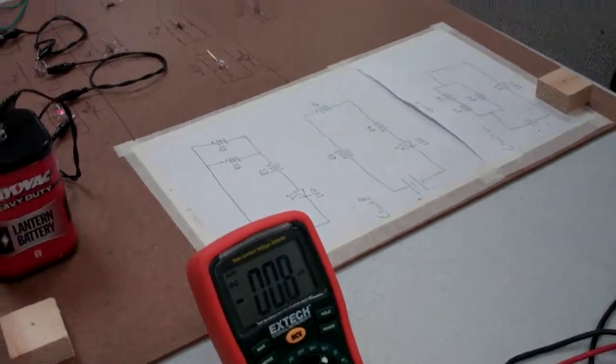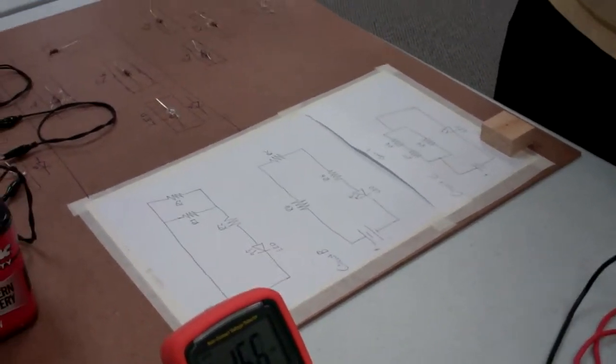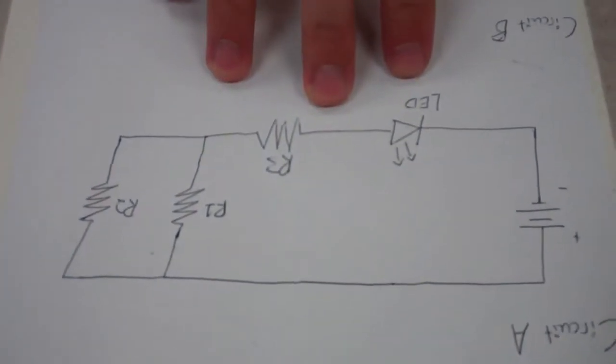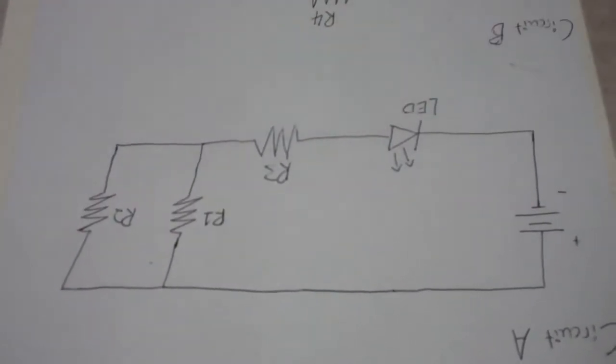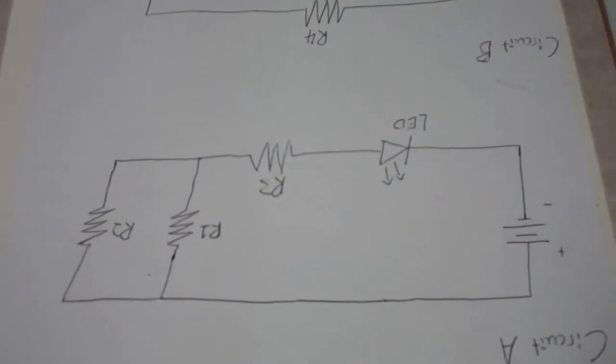What circuit are we working on today? We are working on circuit A, which consists of three resistors and an LED.